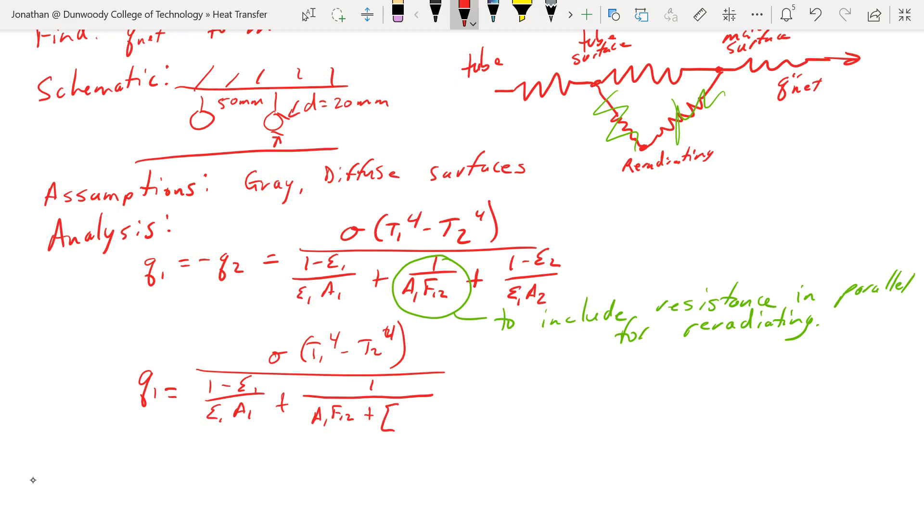So they're in parallel, so we have to add the inverse of the inverses. So before we would add 1 over A1 F12, plus now we're going to take the inverse of these guys: 1 over A1 F1R, that's the part that's going to our re-radiating surface in the top, plus 1 over A2 F2R, that's the re-radiating surface to our material surface. We're going to add the inverse of those, and then plus 1 minus epsilon 2 over epsilon 2 A2.